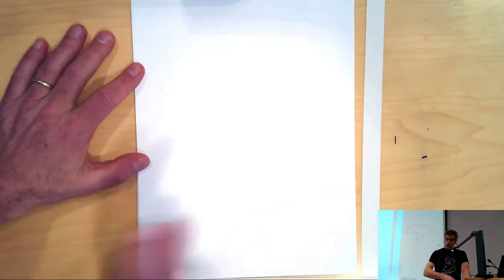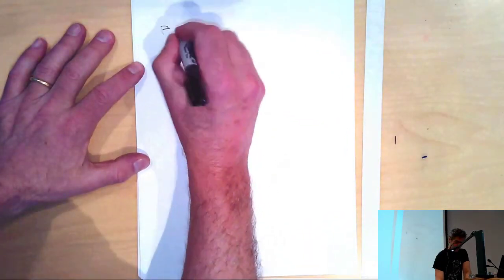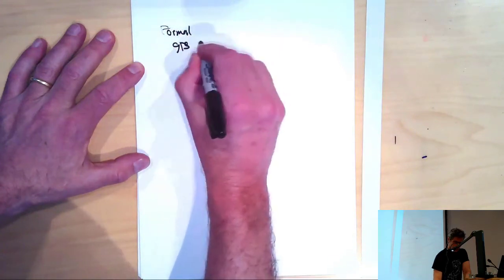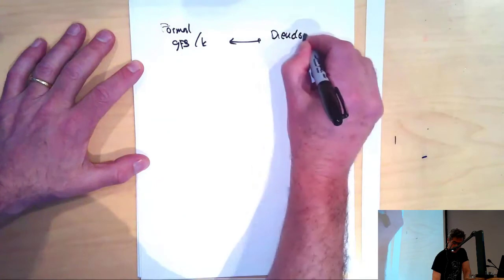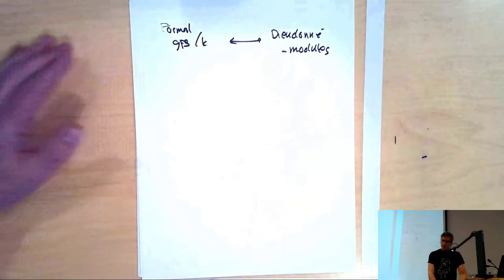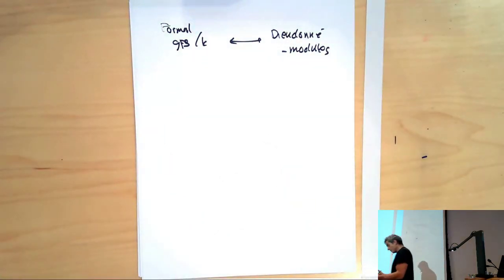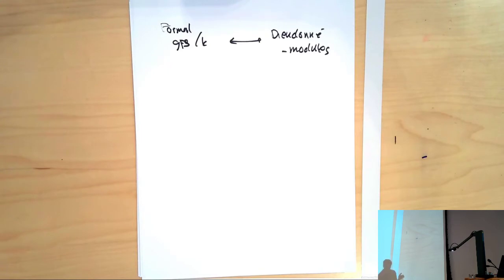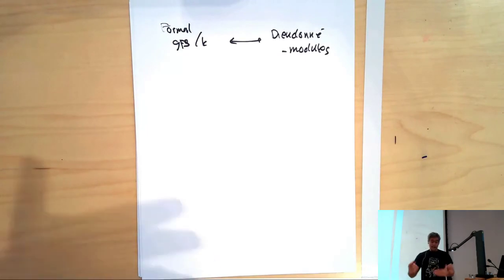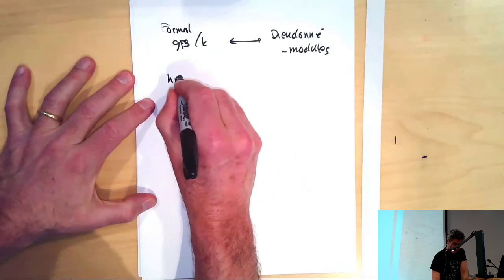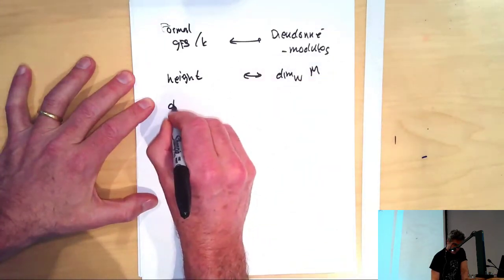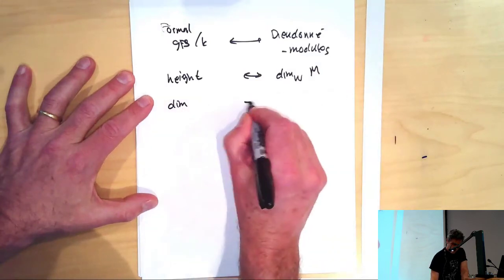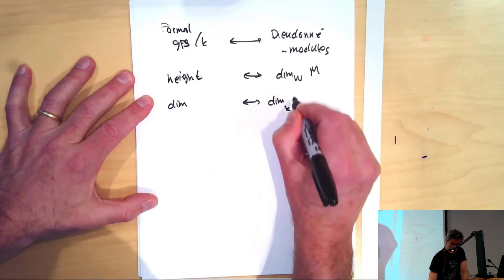There are some other little assumptions to get this all straight — they're in the notes. You need to know that M is p-adically complete, and V is pro-nilpotent on M. So formal groups over k are equivalent to the category of suitable Dieudonné modules. Now a formal group had a dimension — I only considered one-dimensional ones but I could have considered a formal group structure on the Lie variety of dimension n. They also have a height. Under this equivalence, the height corresponds to the dimension over W of M, and the dimension corresponds to the dimension over k of M mod VM.